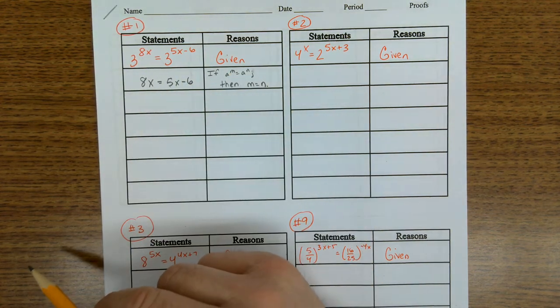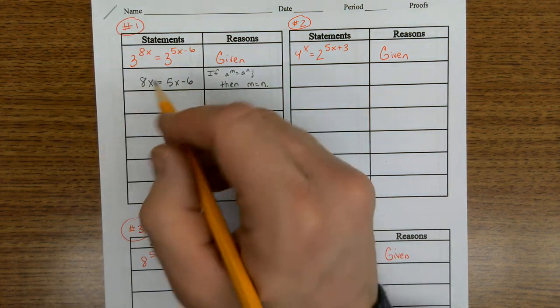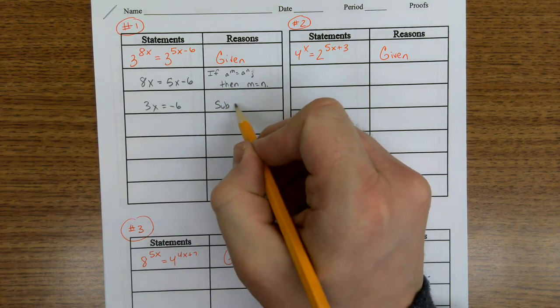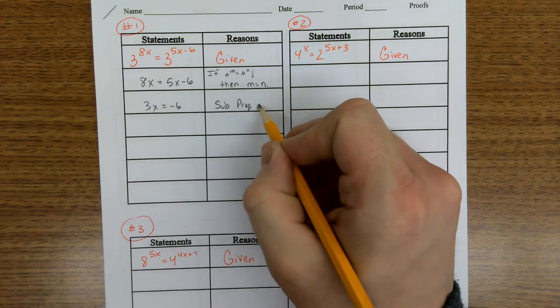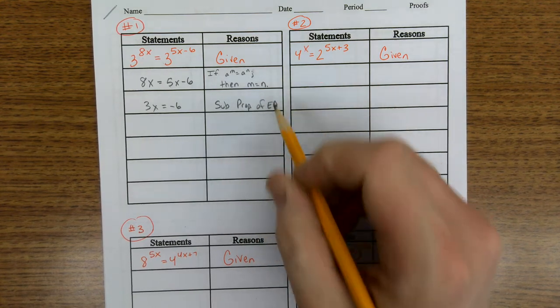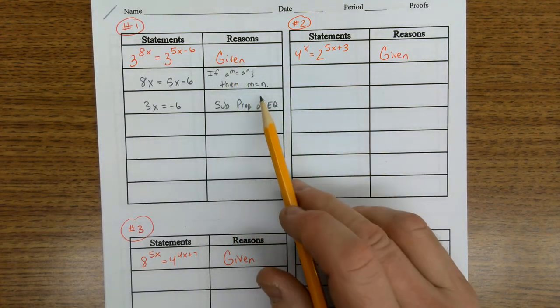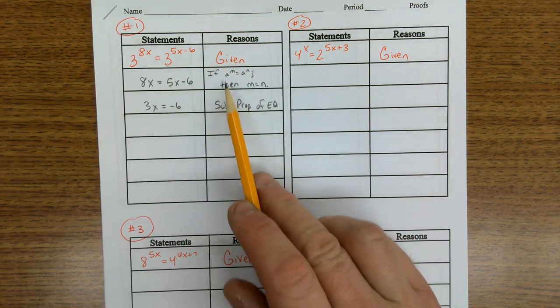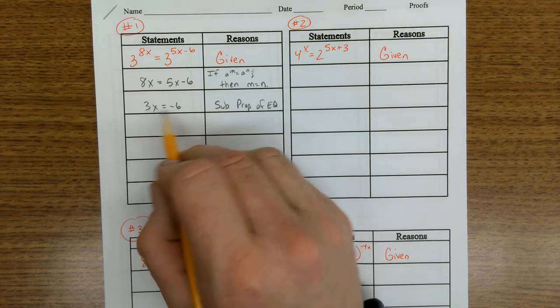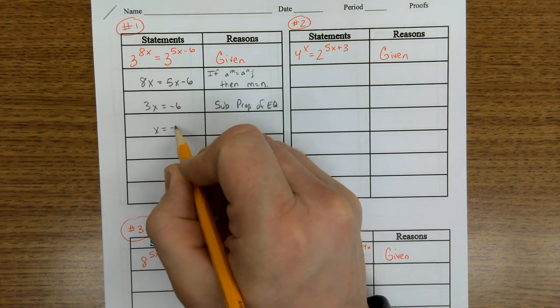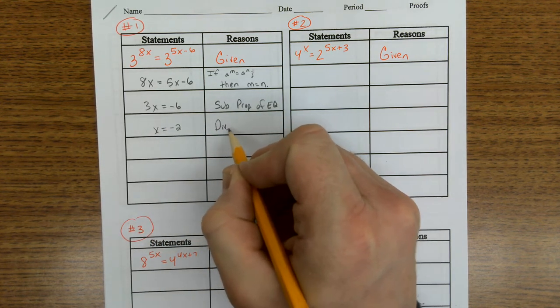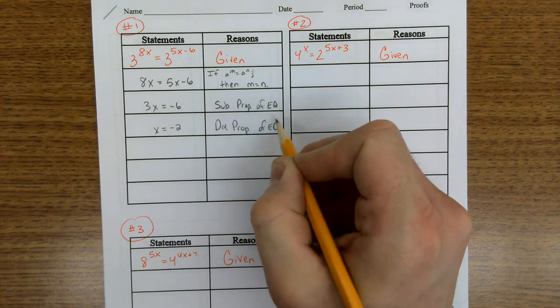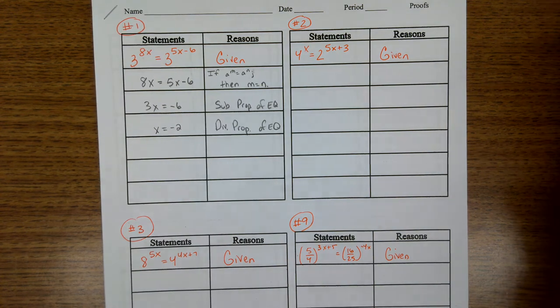Now it's a regular beginning year algebra problem. We can subtract 5x from both sides, and we have 3x equals negative 6. That's called the subtraction property of equality. On all of these proofs, write down what you are doing. We were given a problem, then we use this rule, then we use subtraction. Now divide both sides by 3. x is negative 2. That's the division property of equality. You'll have to do this next year in geometry, so it's good practice now.